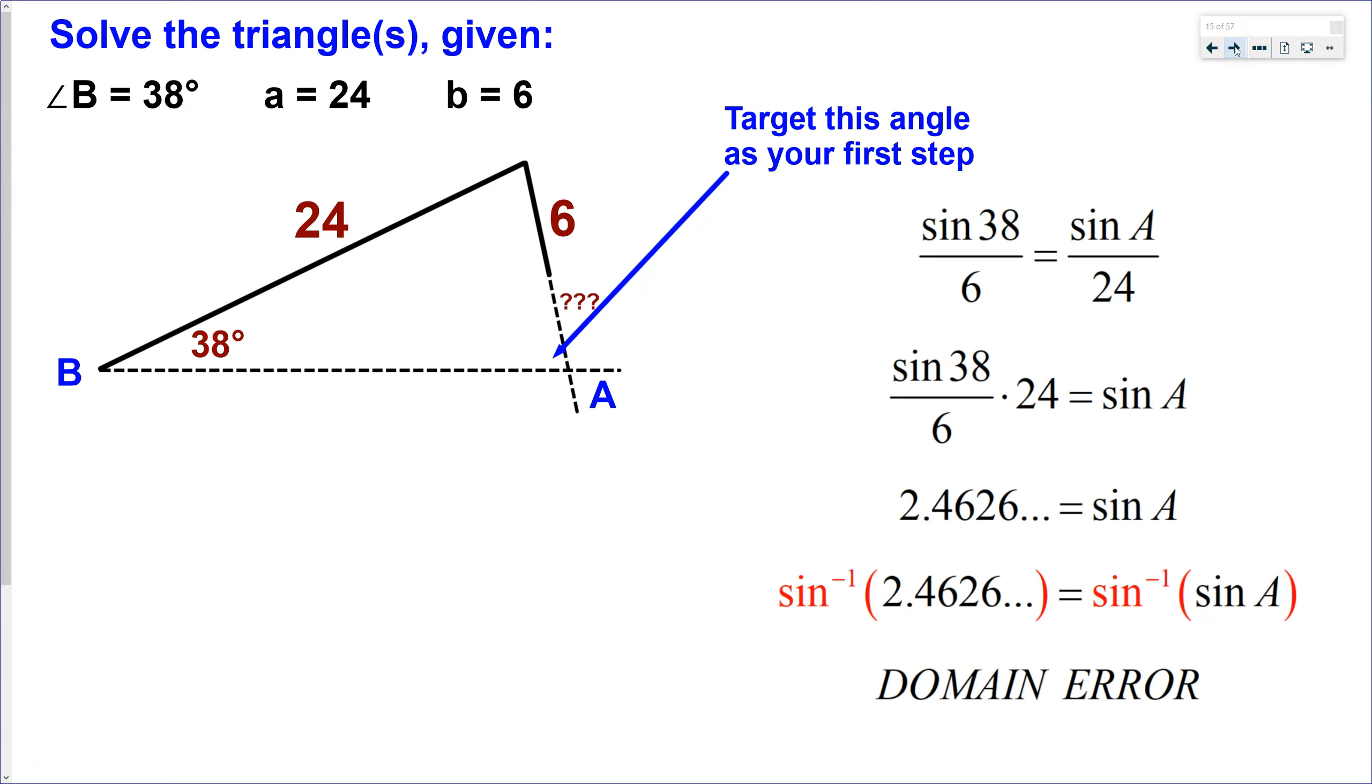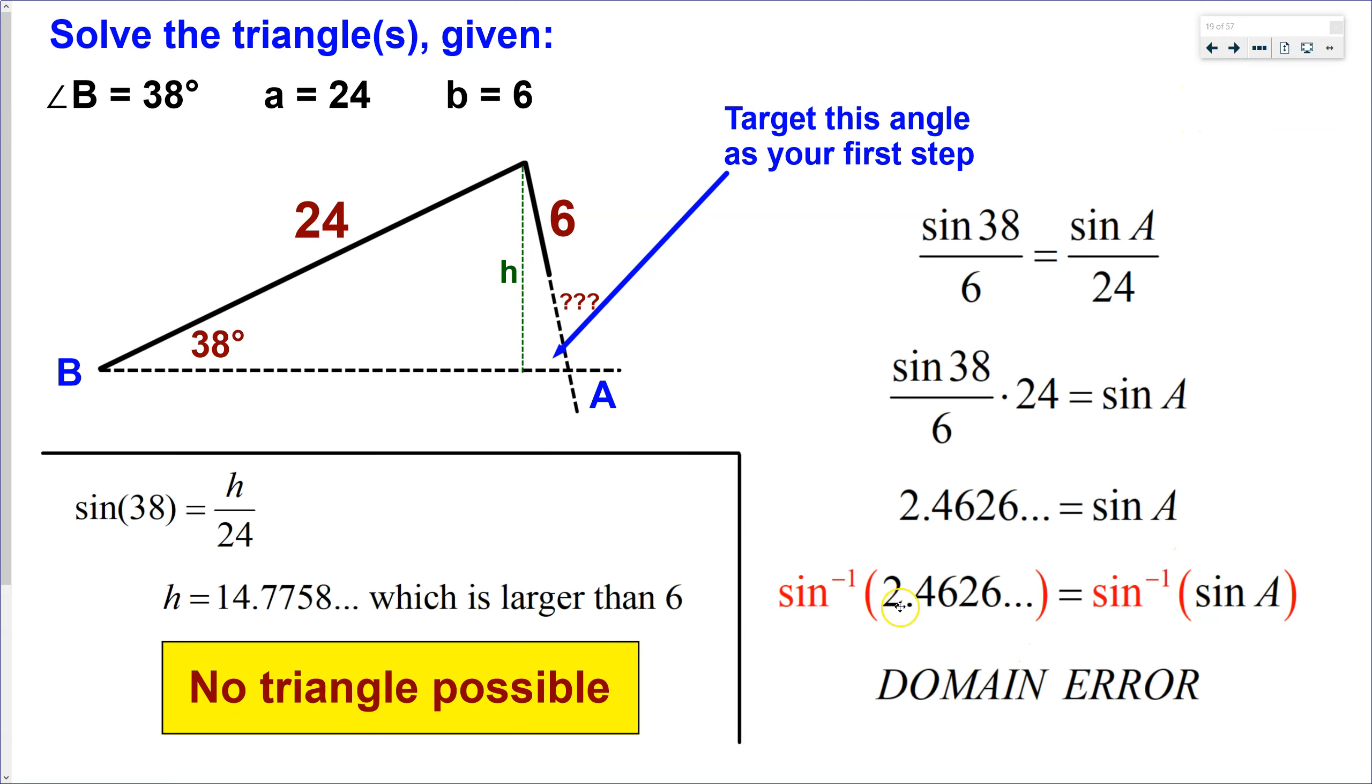Now, your job is to interpret that as this is not possible, meaning that this side is too short to intersect at this intersection. The other way we can confirm this is we can add to the drawing to try to figure out, is 6 long enough? So I'd like to figure out what this height is. And if this height right here is longer than 6, then there's no way that that 6 is going to be able to make that connection. So if I draw this perpendicular line, well, now I have a right triangle and I can use SOHCAHTOA. So I can write sine of 38 is h over 24, solve for h, and I find that the height of that triangle is 14.7, so there's no chance of a segment of 6 making contact with the base of this triangle. So therefore, either one of these results, you have to interpret that there is no triangle possible.